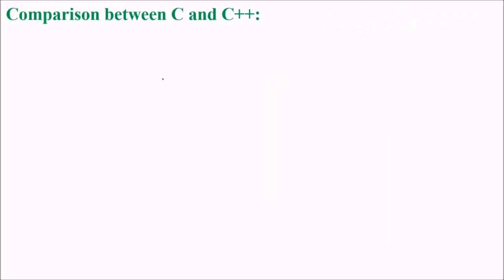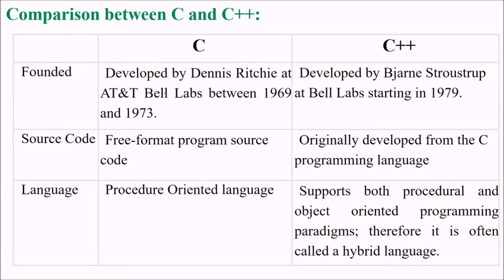Let us see the comparison between C and C++, or the differences between C and C++. C was developed by Dennis Ritchie at AT&T Bell Labs between 1969 and 1973, while C++ was developed by Bjarne Stroustrup at Bell Labs starting in 1979. C is a free-format program source code, while C++ was originally developed from the C programming language.